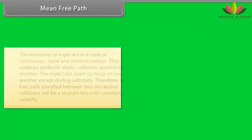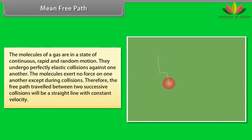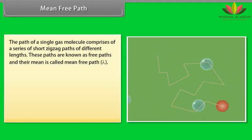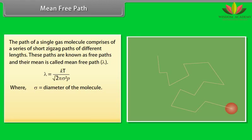Mean free path. The molecules of a gas are in a state of continuous, rapid and random motion. They undergo perfectly elastic collisions against one another. The molecules exert no force on one another except during collisions. Therefore, the free path travelled between two successive collisions will be a straight line with constant velocity. The path of a single gas molecule comprises of a series of short zigzag paths of different length. These paths are known as free paths and their mean is called mean free path. Lambda is equal to KT upon root 2 pi sigma square P, where sigma is equal to diameter of the molecule, P is equal to pressure of the gas, T is equal to temperature of the gas, K is equal to Boltzmann's constant.